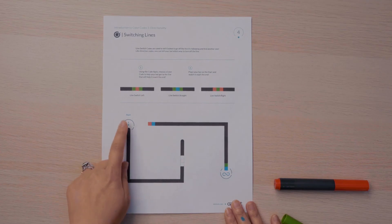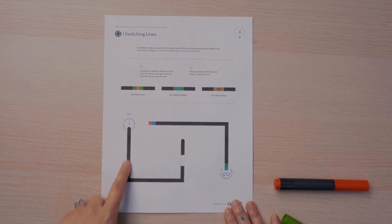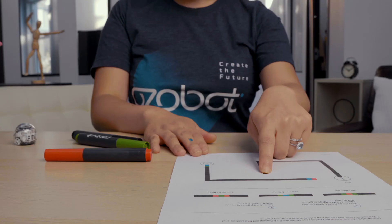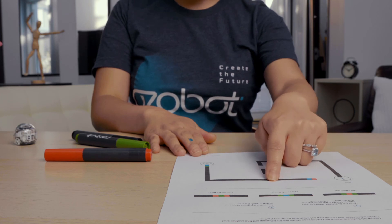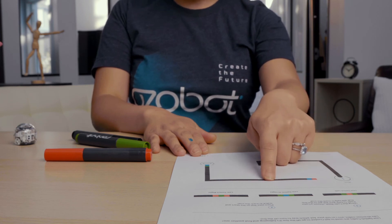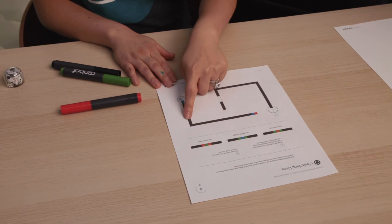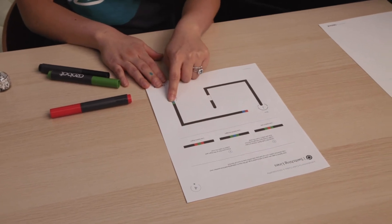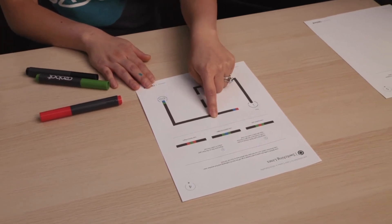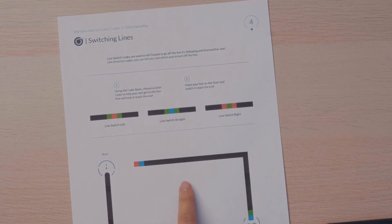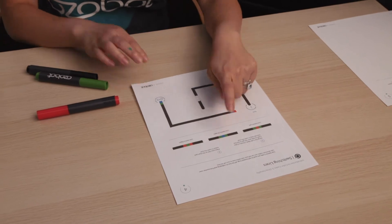We want our bot to start here and to end here. If it travels all the way over this color code, I'm going to have it travel straight so that it can land on this line and travel all the way to the end. I'm choosing straight because this gap is smaller than this gap right here. So line switch straight is green, blue, green.